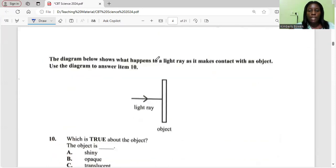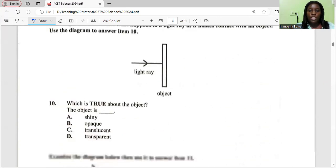The diagram below shows what happens to a light ray as it makes contact with an object. Use the diagram to answer item 10. Which is true about the object? It is shiny, it is opaque, translucent, or transparent. We see the light ray going in this direction. I'm not seeing where it's going out in another direction. I'm not also seeing where it's reflecting so it's not shiny. If it's transparent it would go through. For translucent some form of light would be passing through it. I think the object is opaque because no light can pass through an opaque object. So the correct answer is A.